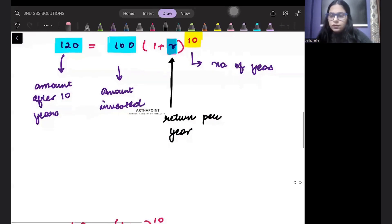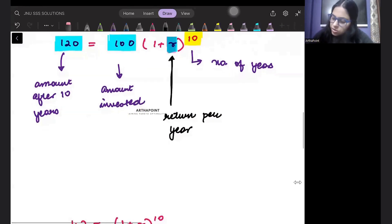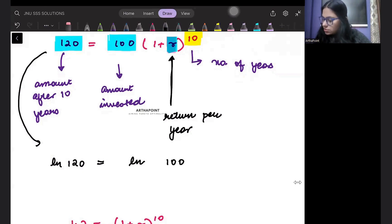Now you have to solve for the value of R. Let us just go ahead and solve this equation. The best way to solve this equation will be to take log on both sides. I can just take 100 on the other side.